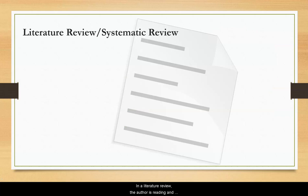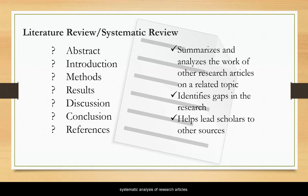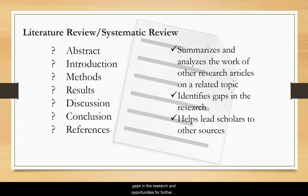In a literature review, the author is reading and assessing the research of a number of scholars. Literature review articles are usually identified as such and may or may not have the typical section headings of other research articles. Literature reviews can also be called systematic reviews, which follow a more systematic analysis of research articles. Reviews summarize the research being done on a specific topic into one article, and also identify gaps in the research and opportunities for further research.